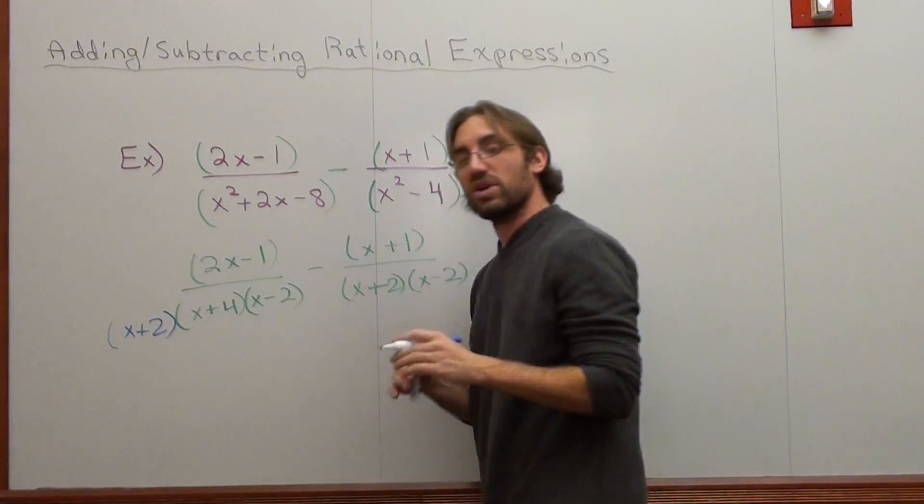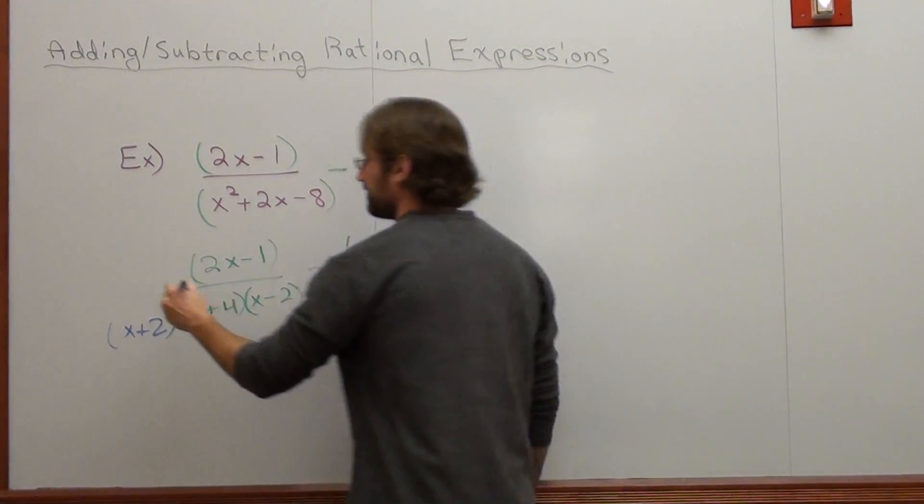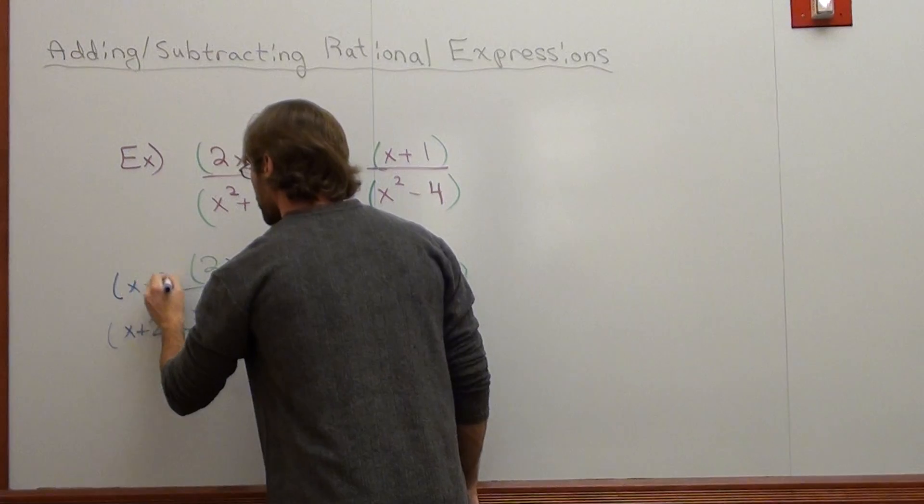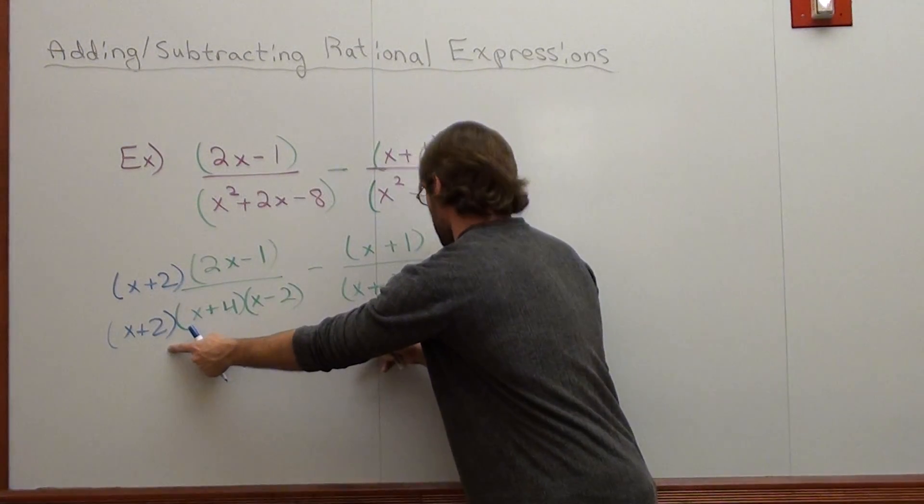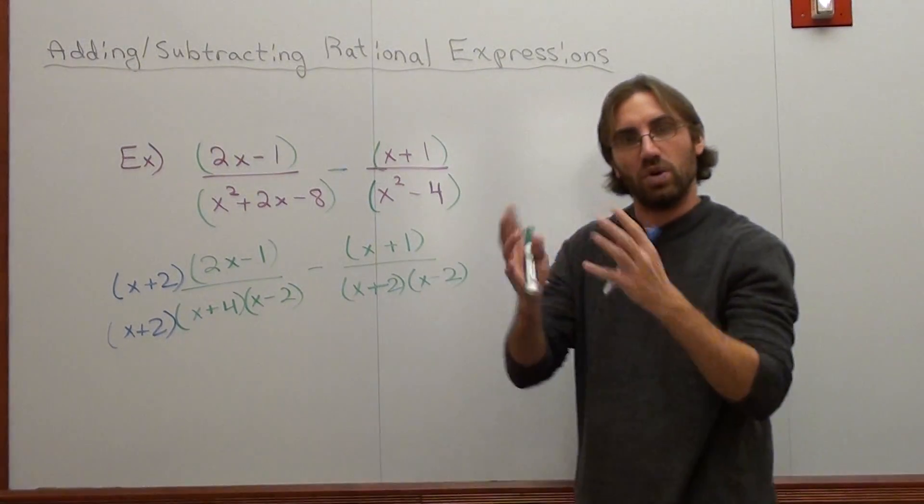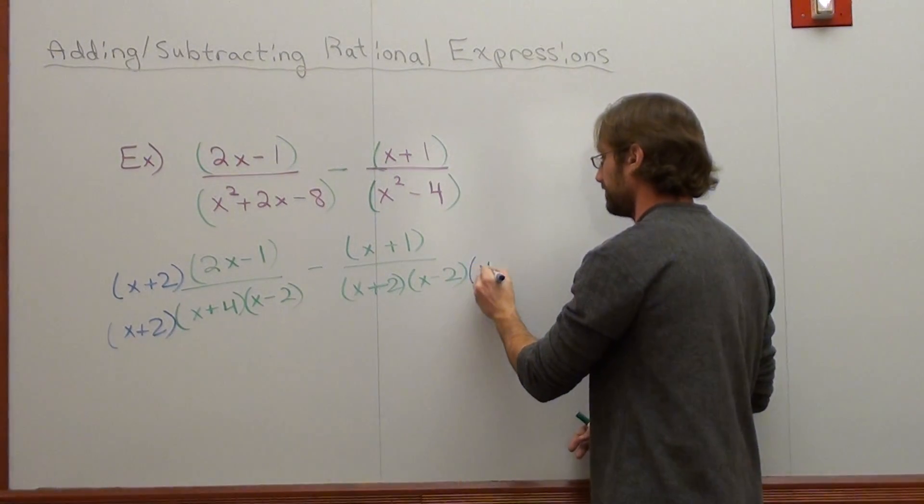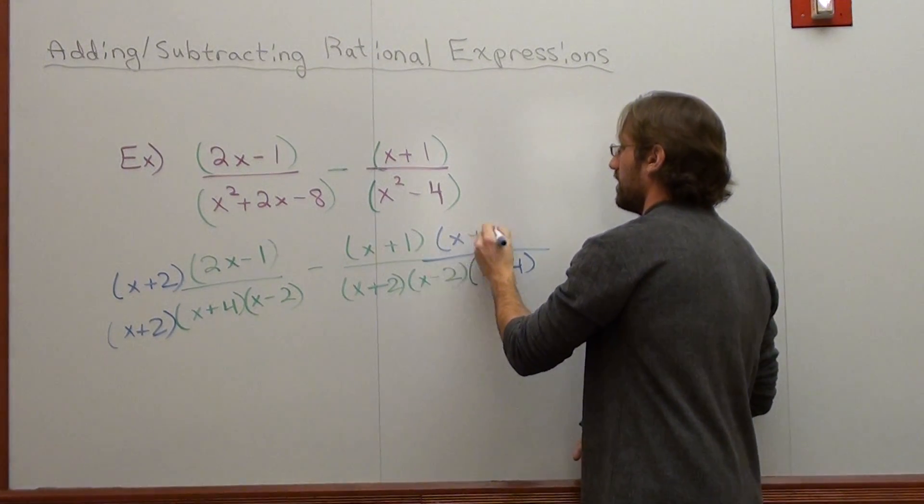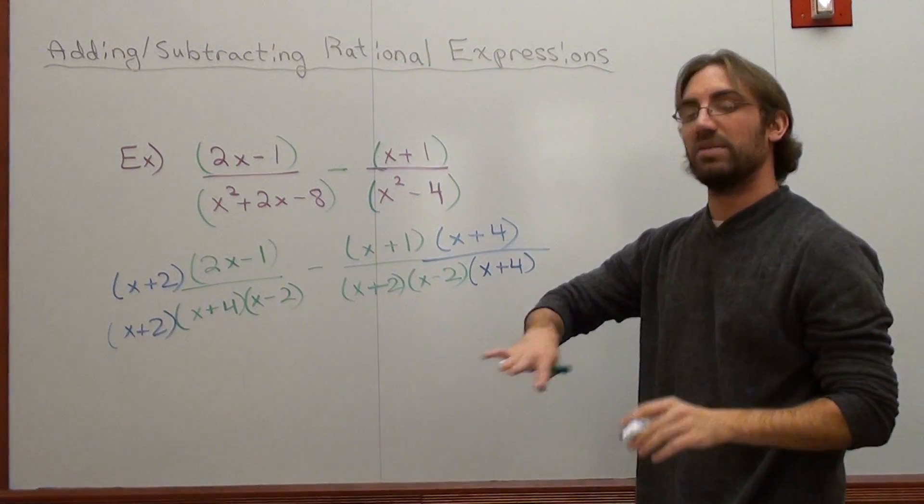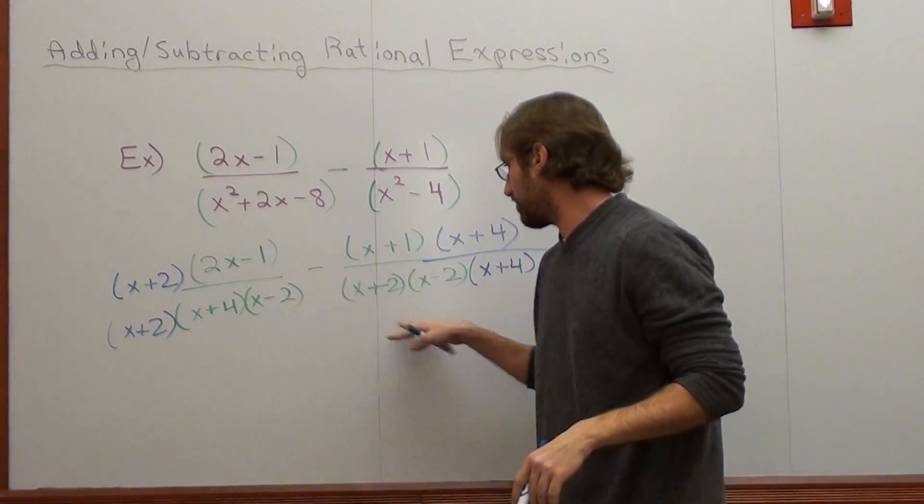But what you do on the bottom of an expression, you do on the top of an expression. Now this has an x plus 2. It has an x subtract 2, it needs a quantity x plus 4. Now when I'm doing this problem, leave the denominator alone. Both of them are now the same.